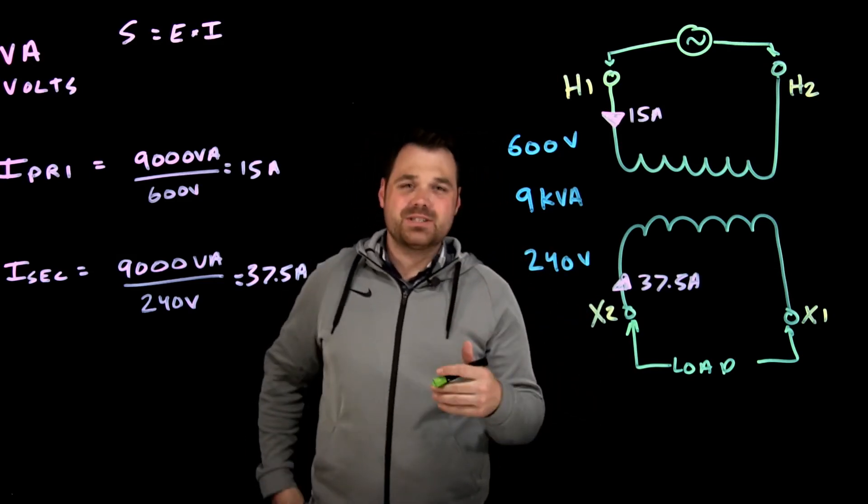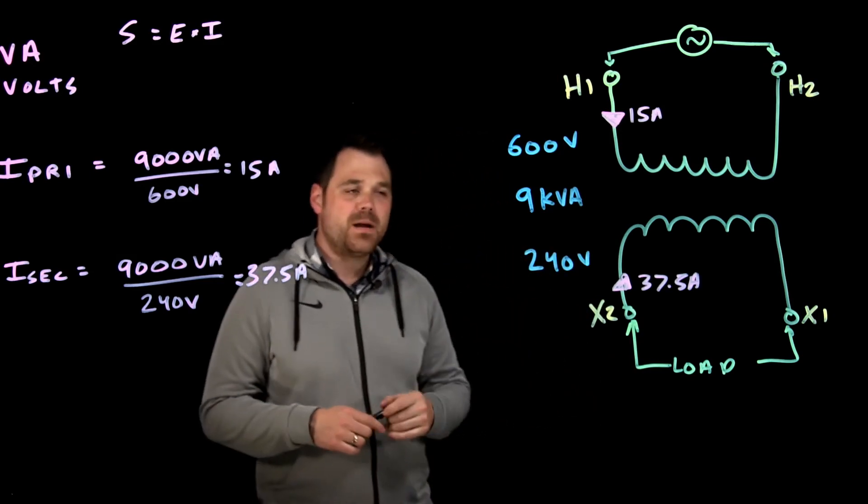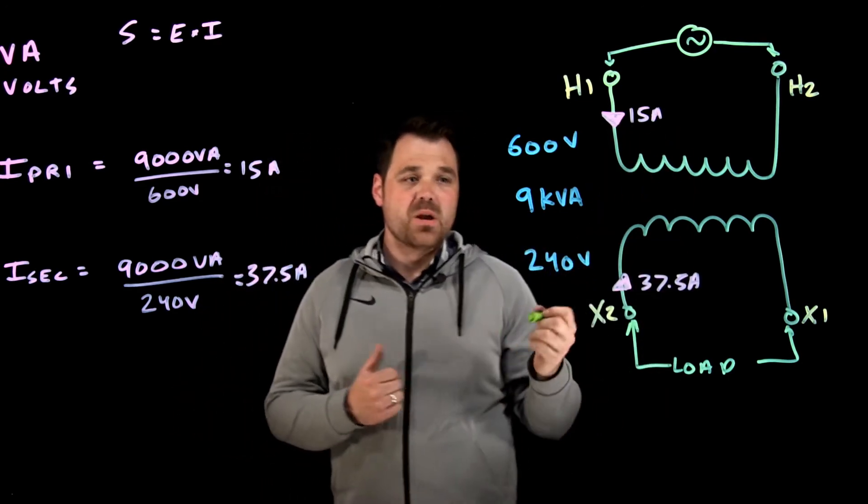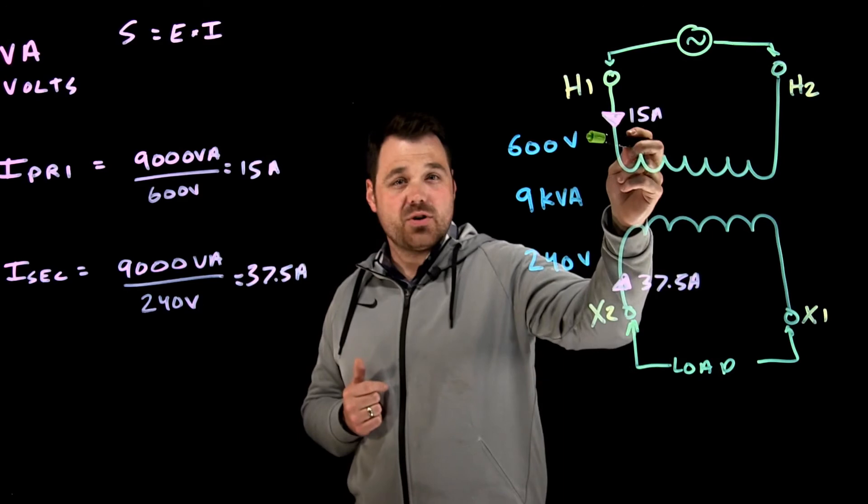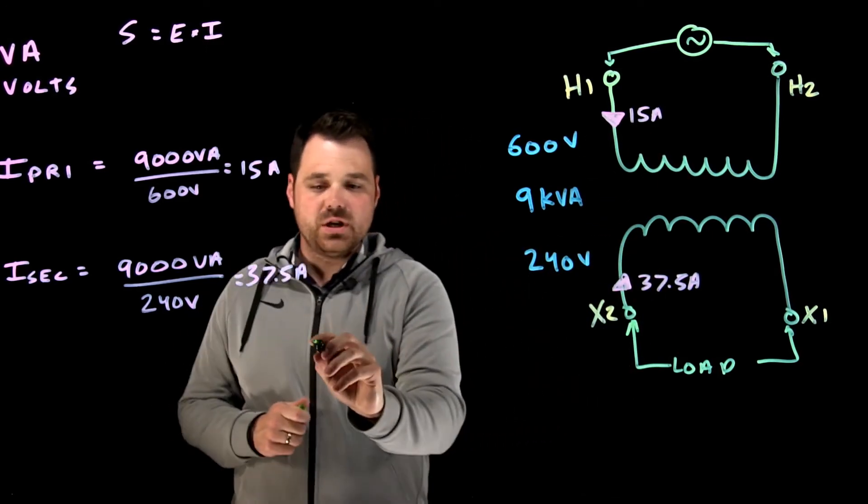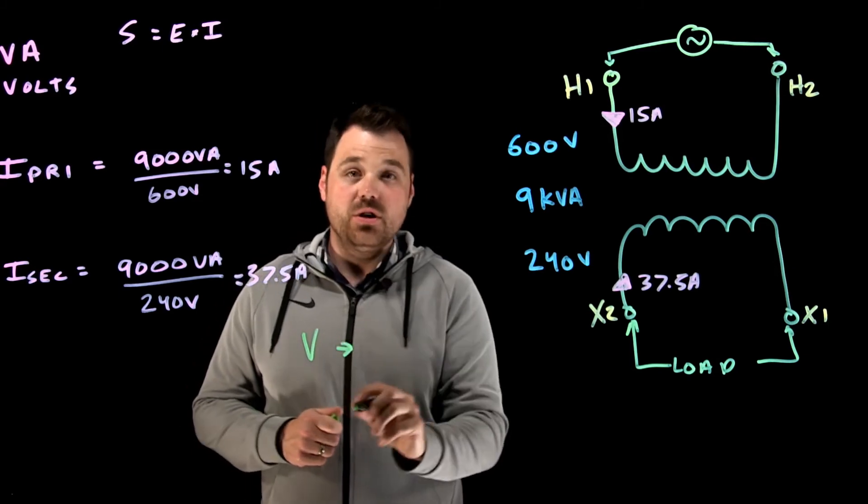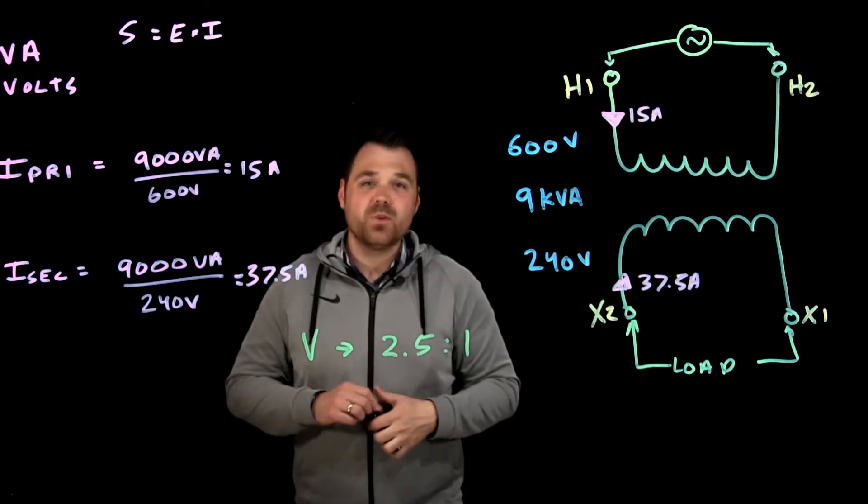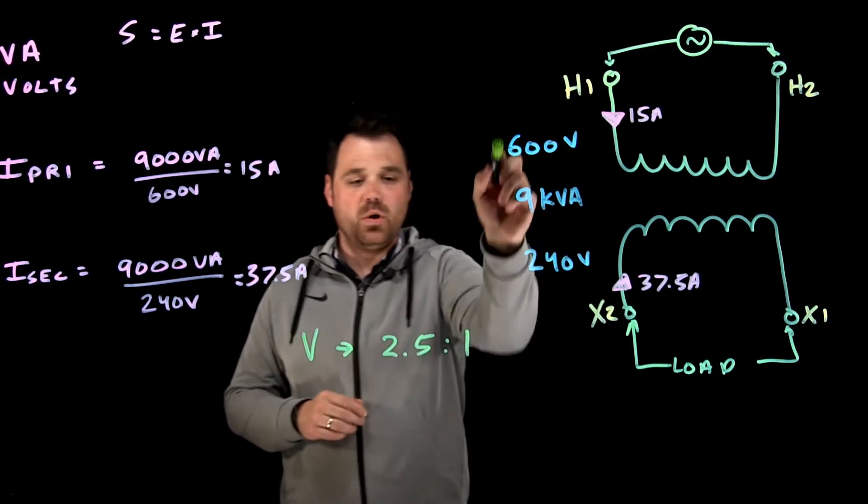The last thing I want to talk about is some of the ratios that we see here. We said we are a 600 to 240 volt transformer. If I go 600 divided by 240, that gives me my voltage ratio. So my voltage ratio here would be 2.5 to 1.